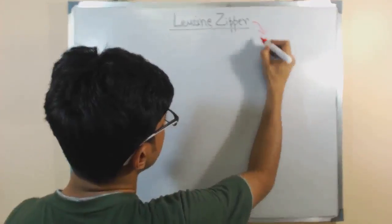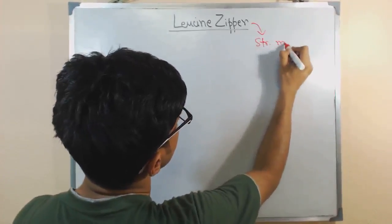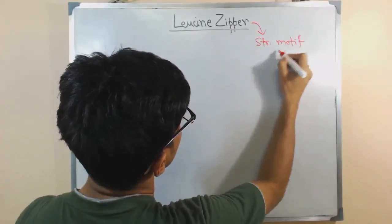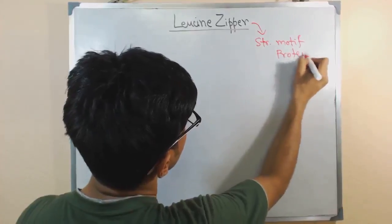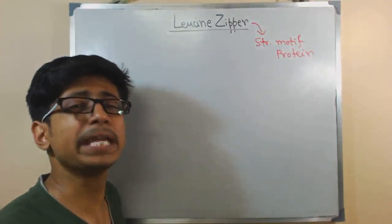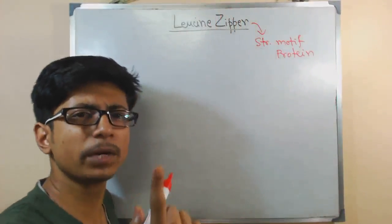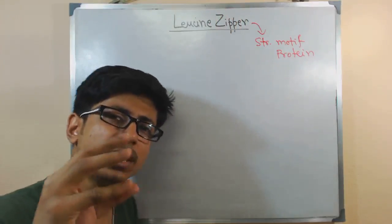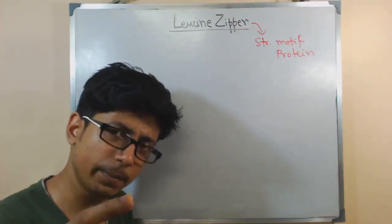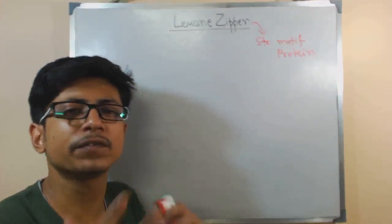Which protein? Many different proteins. This is a structural motif - this never means one particular protein. This is a structural segment that is found in different proteins. And mainly, most of the cases, those proteins are eukaryotic transcription factors.